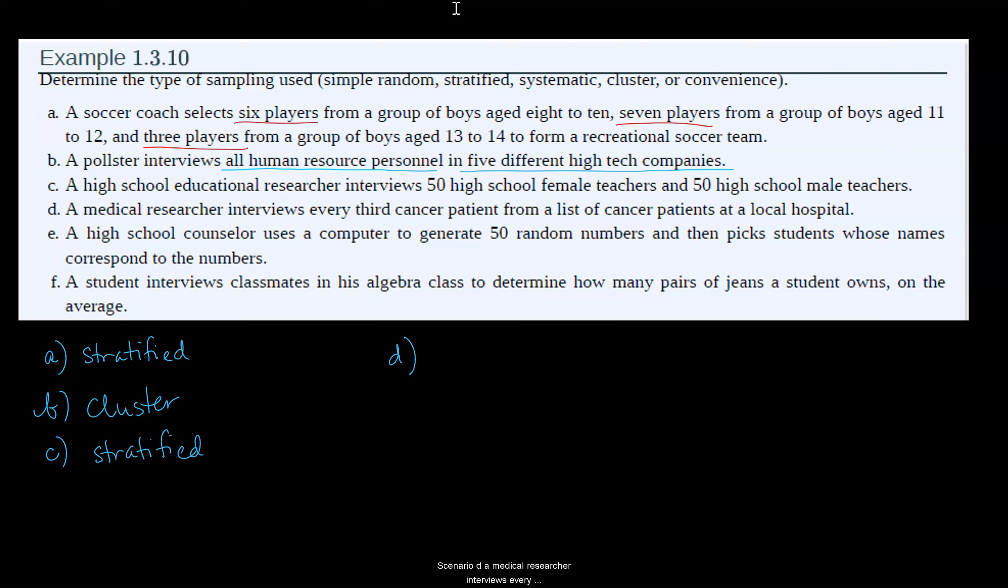In Scenario D, a medical researcher interviews every third cancer patient from a list of cancer patients at a local hospital. Since we're selecting every third, we're skipping some systematically. So this is a systematic sample. Anytime we're counting over a certain number, we're doing this systematically.